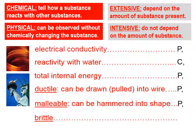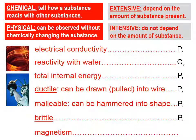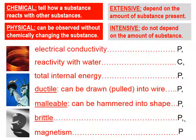Malleability is also a physical property, because we can hammer a metal into shape without doing a chemical reaction on it. Brittle is kind of the opposite of malleable, and it is also a physical property. Glass is brittle, for example — if you shatter it, it hasn't changed its identity; it's still glass, just in many pieces. Magnetism, too, is a physical property, because we can observe it without doing a chemical reaction.